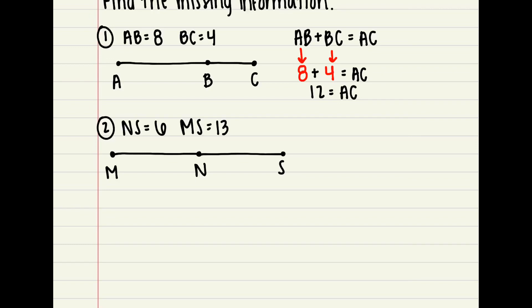In example two, remember with geometry you cannot trust your pictures, so just because the two parts look equal doesn't mean they are. I tell you that NS is equal to 6 and MS is equal to 13. Our first step is to write the Segment Addition Postulate. Hopefully you chose MN plus NS equals MS. Now fill in any information you know: I was not given MN, so it stays as MN, plus NS equals 6, and that equals MS which is 13.